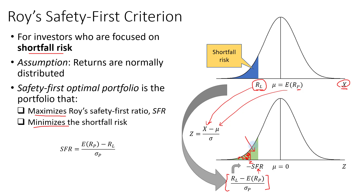Some may wonder how the Safety First Ratio compares to the Sharpe Ratio, since the formulas look quite alike. The Safety First Ratio and the Sharpe Ratio will only be equal if the investor's minimum acceptable return equals the risk-free rate of return. Of course, each investor's minimum acceptable return is unique and will differ among investors.